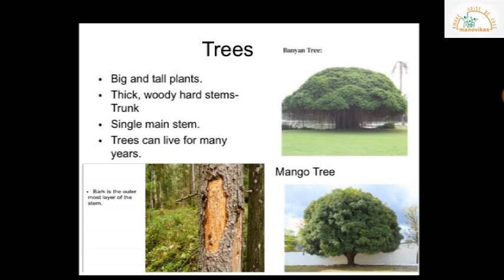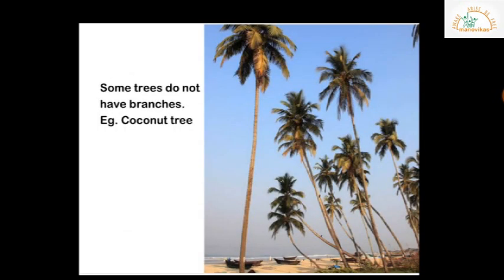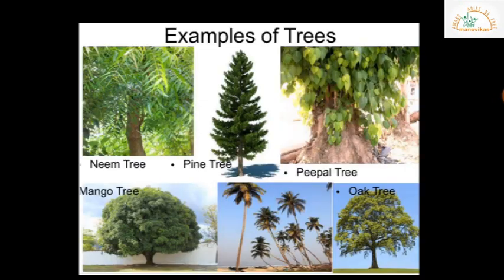The single main stem or trunk gives rise to many branches that bear leaves, flowers, and fruits. Trees can live for many years. Some trees do not have branches — for example, the coconut tree, which has only one main stem bearing leaves, flowers, and fruits. Some examples of trees are neem tree, pine tree, peepal tree, mango tree, coconut tree, and oak tree.